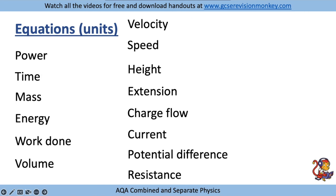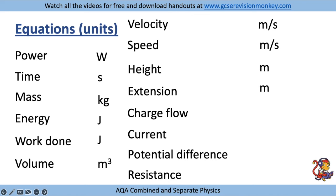If you can remember all of the units for these quantities: power is measured in watts, time in seconds, mass in kilograms, energy in joules, and work done in joules - because they are the same thing. Volume in metres cubed, velocity and speed both in metres per second, height and extension in metres, charge flow in coulombs, current in amps, potential difference in volts, and resistance in ohms. Those are the key ones for paper one.